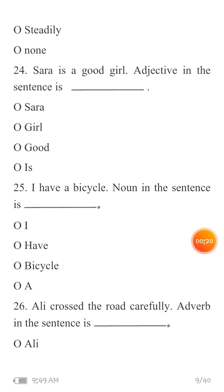MCQ 25: The sentence is 'I have a bicycle.' You have to identify the noun and write it in front of MCQ number 25. The options are: I, have, bicycle, and a. Remember, a noun is just a name of a thing, person, or place — so identify the name of something in this sentence.